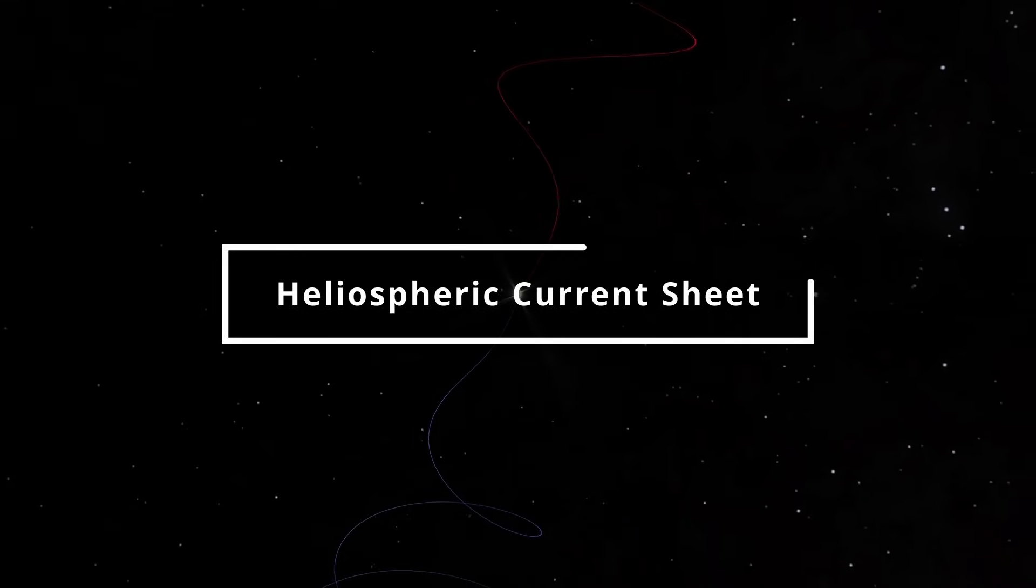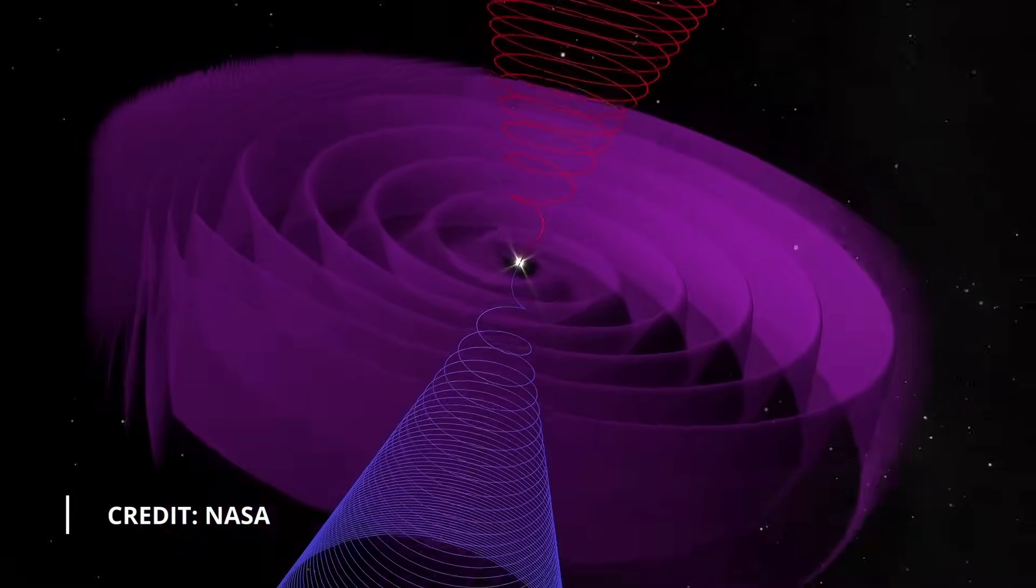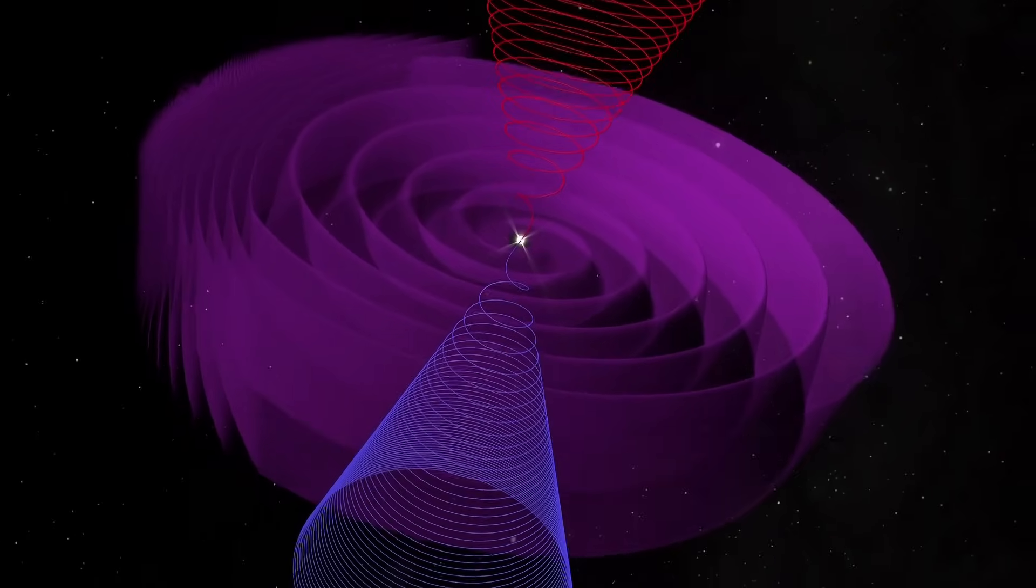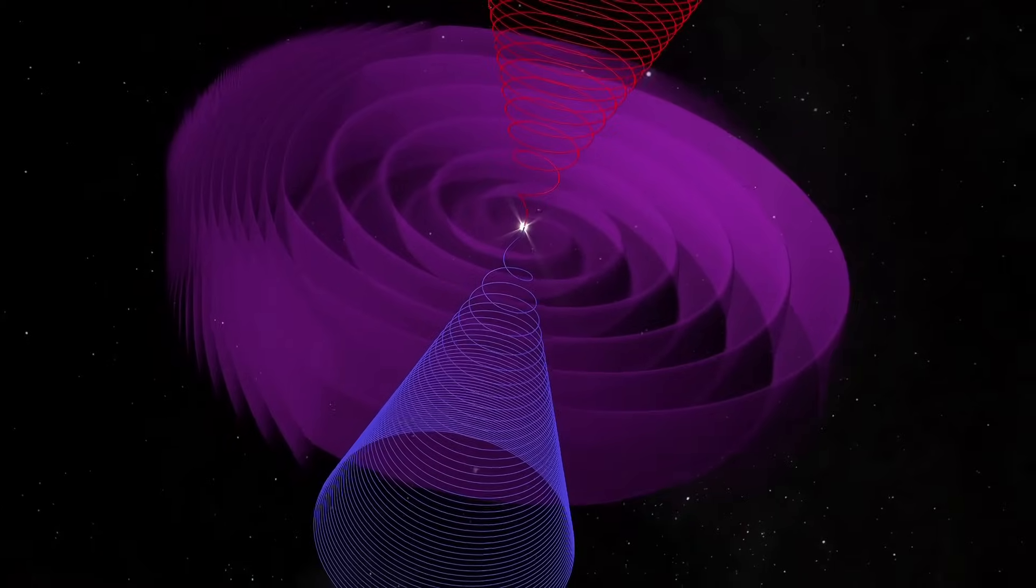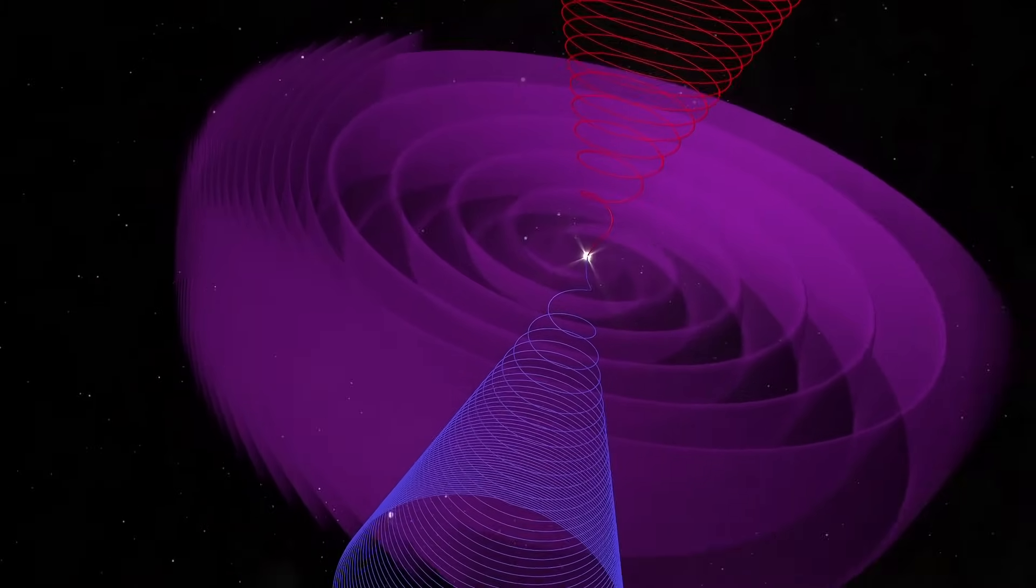Recent research has revealed an intriguing correlation between the direction of the sun's magnetic field and lightning rates. On the days when the sun's magnetic field was oriented towards Earth, the lightning rates were found to be approximately 50% higher compared to days when the magnetic field pointed away from our planet.